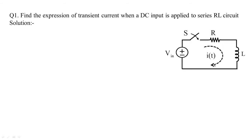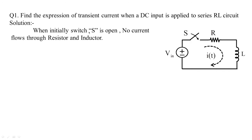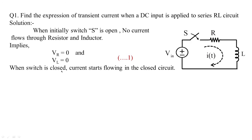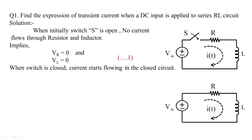We must remember that the conditions before and immediately after switching mean the current won't change in the inductor. Current will flow in the inductor only after the switch is closed, and we treat this as the switching condition for T greater than zero. When the switch is closed, current starts flowing in the closed circuit.